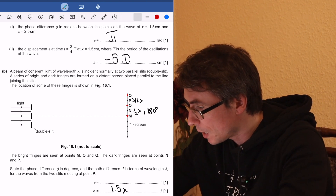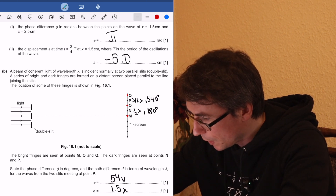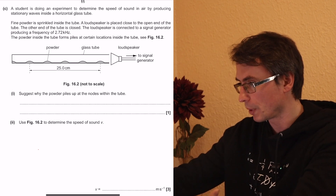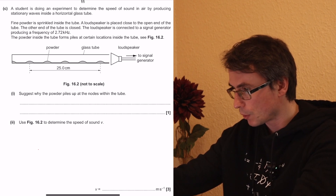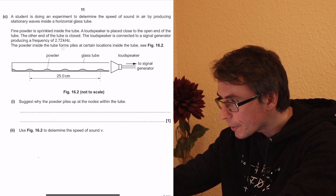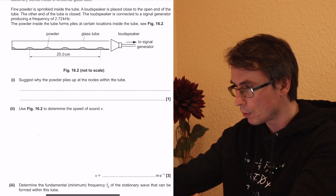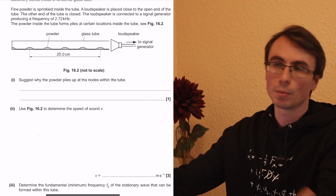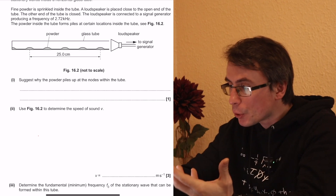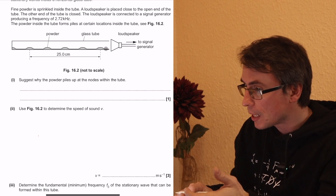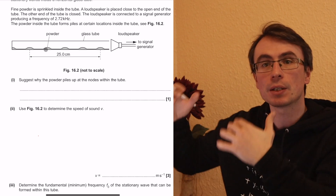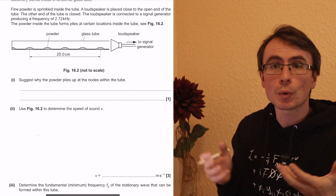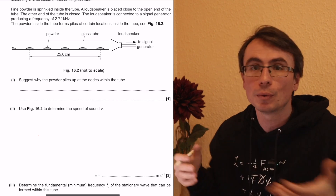A student is doing an experiment to determine the speed of sound in air by producing stationary waves inside a horizontal glass tube. Fine powder is sprinkled inside the tube — a really cool experiment. A loudspeaker is placed close to the open end of the tube; the other end is closed. The stationary wave is formed from the sound wave being reflected backwards, superposing with the original wave, creating nodes and antinodes. At the nodes there is zero displacement, so the powder will not be moving.